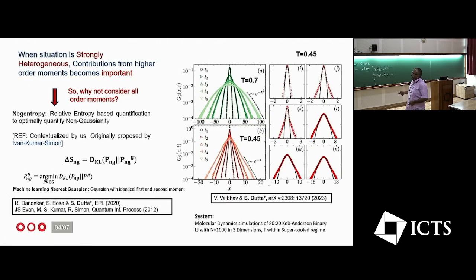We have contextualized that idea into this glass problem. So the idea to compute this non-Gaussianity measure was very simple. For example, given some kind of a non-Gaussian distribution, it has to identify its nearest Gaussian.